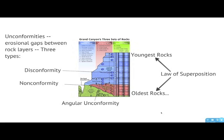The easiest ones to identify are the angular unconformities. These are like this line here separating the Tonto Group from the Grand Canyon Supergroup rocks. These rocks are tilted, while the Tonto Group rocks are flat. This erosional boundary between them is an angular unconformity.